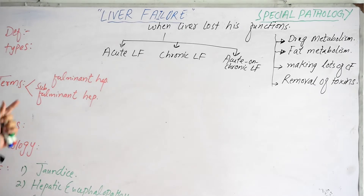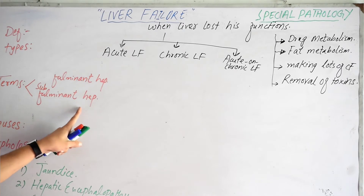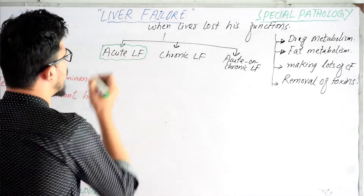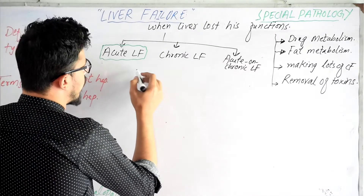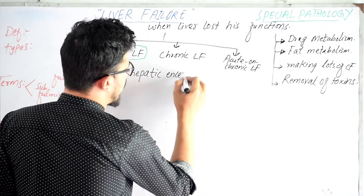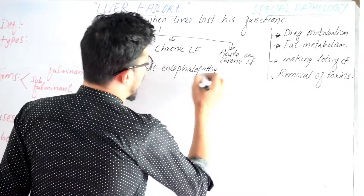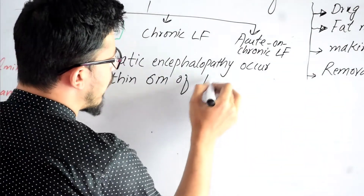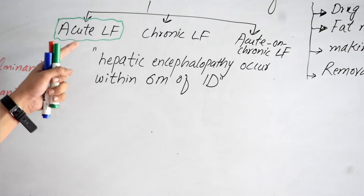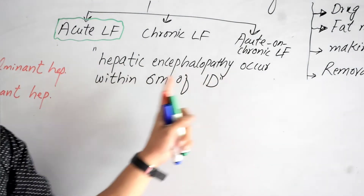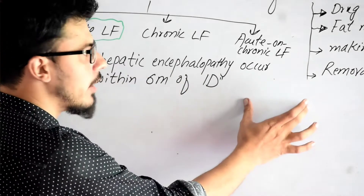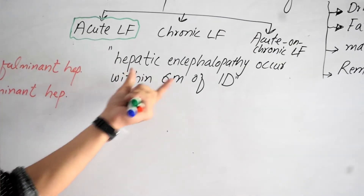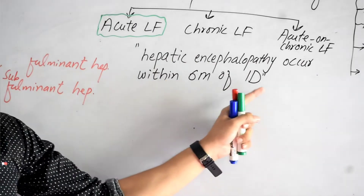There are two important terms: fulminant hepatitis and subfulminant hepatitis. Acute liver failure is defined as whenever hepatic encephalopathy occurs within six months of initial diagnosis. Hepatic encephalopathy occurring after six months of initial diagnosis is classified as chronic liver failure.